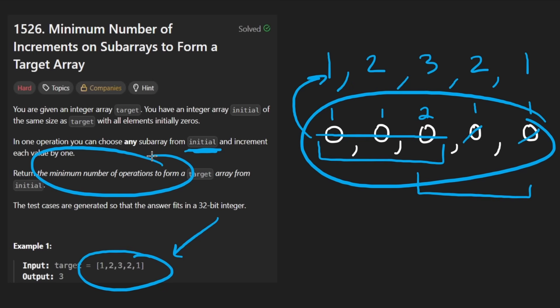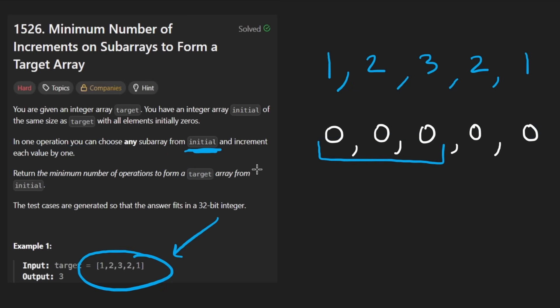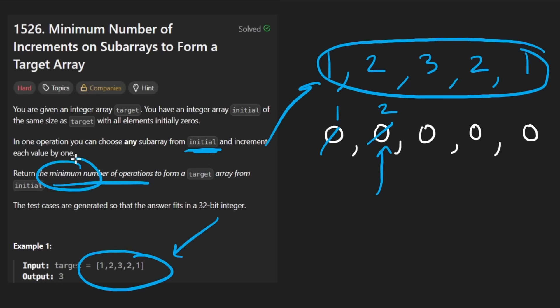And the only operation we are allowed to do is select any subarray from here. So any contiguous subarray, and we can then increment each of those by one. So if we select this subarray, then we are basically turning all of these into a one. Maybe next time we do this subarray over here, then we're turning this into a two by incrementing it. And then each of these is going to be one, something like that.